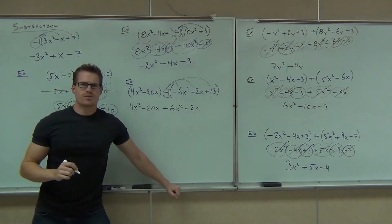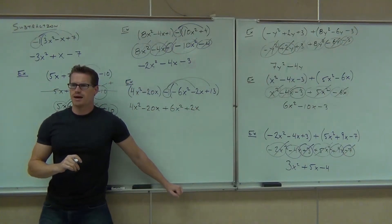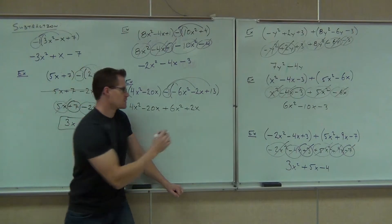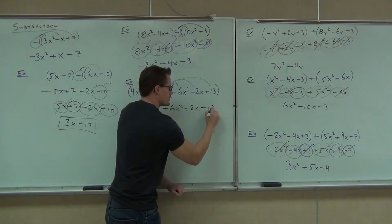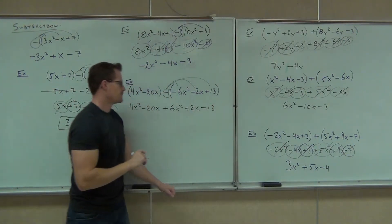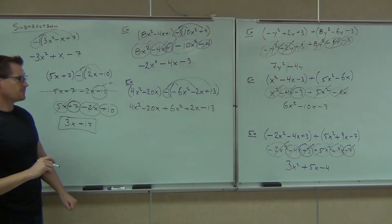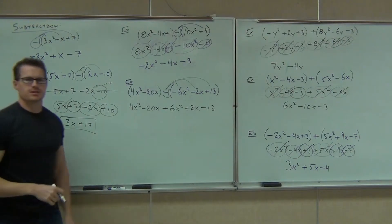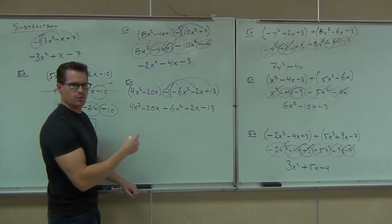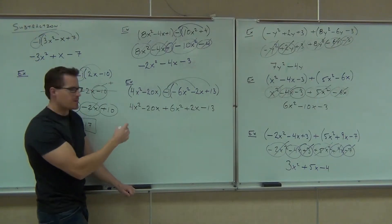And lastly, everybody, what are you going to write last? Negative 13 — that means minus 13. After that, combine like terms. We should be pretty good at that point.